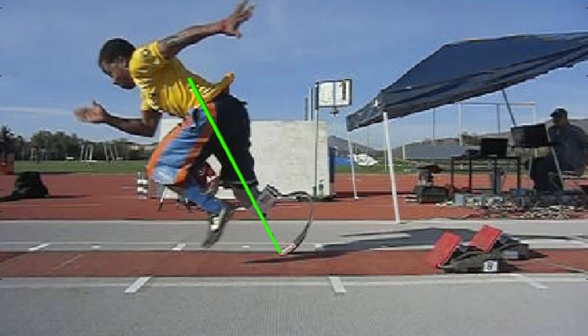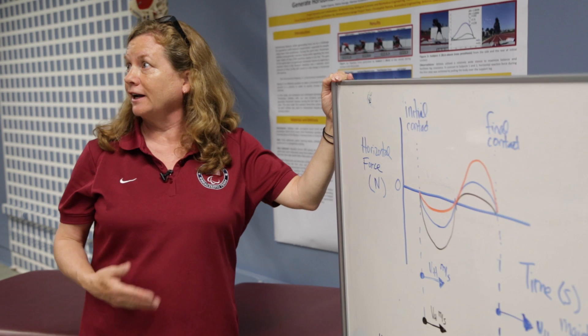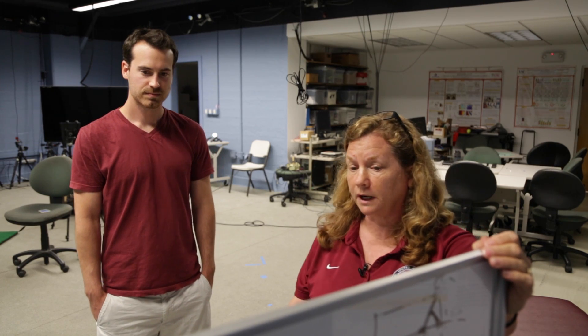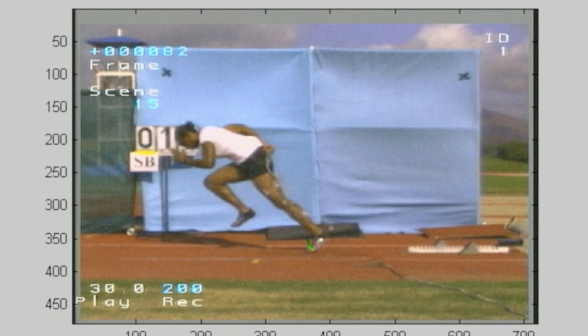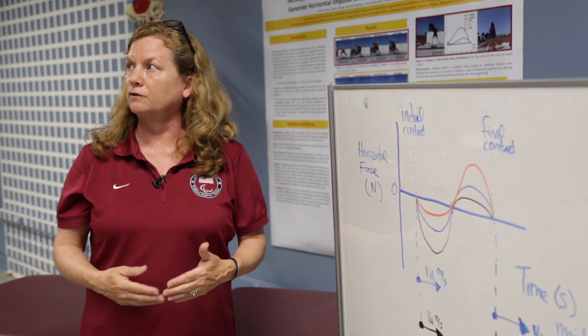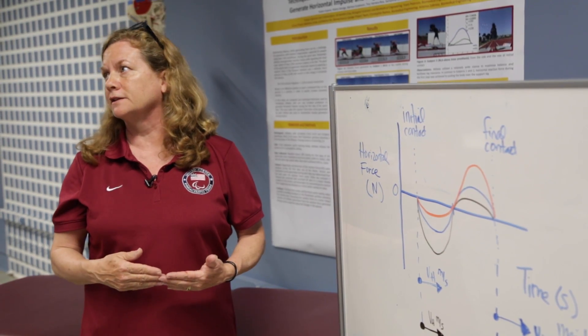In sports biomechanics it's really important that we understand the forces causing the motion that you see. To do that, we actually put force plates in the training areas where the athletes are performing. By using the force plates we're able to measure the horizontal force-time curves, and we get a sense of what it is about that foot contact that's working for them and what might be working against them.